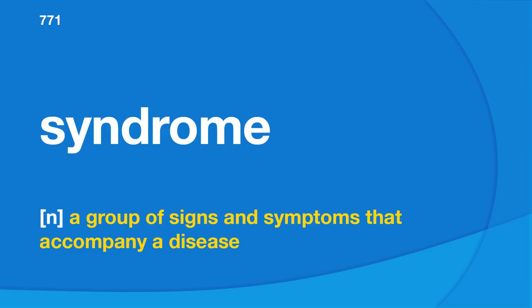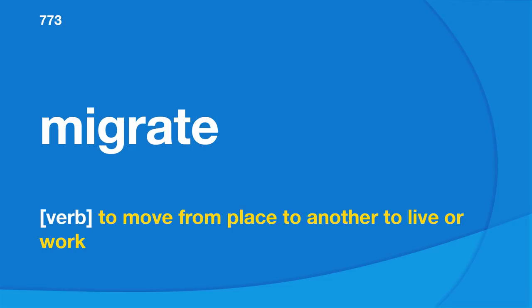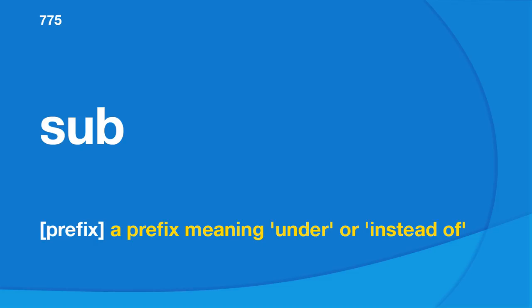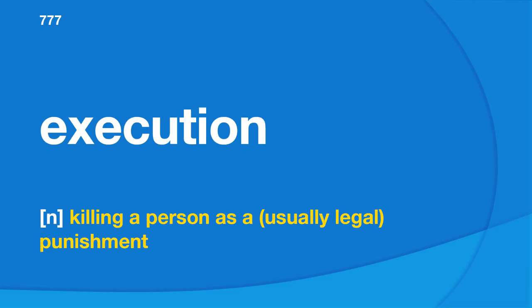Sub: a prefix meaning under or instead of. Bundle: a group of things that are tied together. Execution: killing a person as a punishment. Evolutionary: concerning evolution. Rhetoric: the study of public speaking or writing techniques. Kidney: an organ in the body that cleans the blood. Suicide: the act of purposely killing yourself because you no longer wish to live. Adaptation: changing to a new form; thing that is changed.